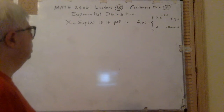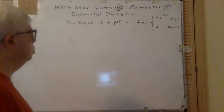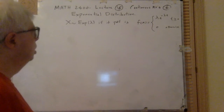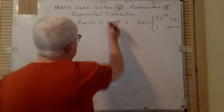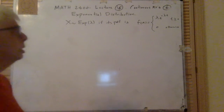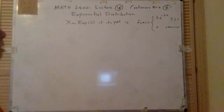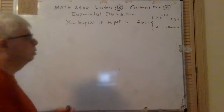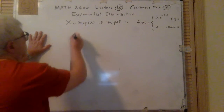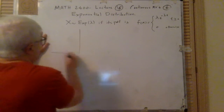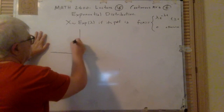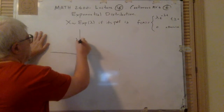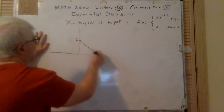We say that random variable X has an exponential distribution with parameter lambda if its PDF is: f(x) = lambda * e^(-lambda*t) for t >= 0, and zero otherwise. It is zero up to this point, then it starts at lambda and goes down to zero.